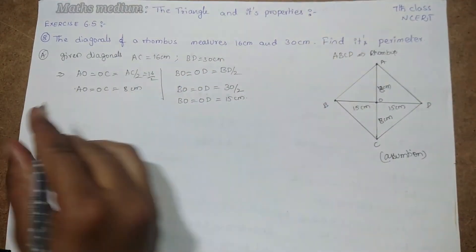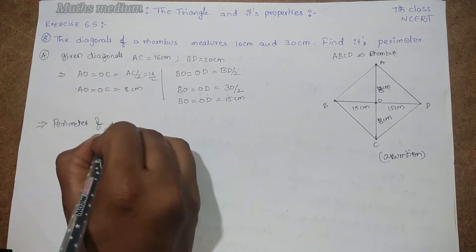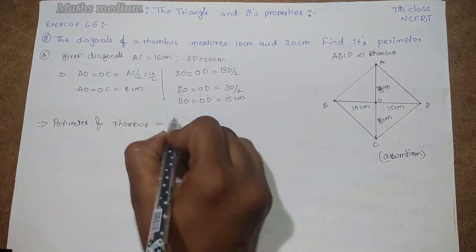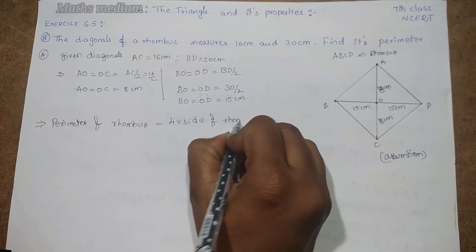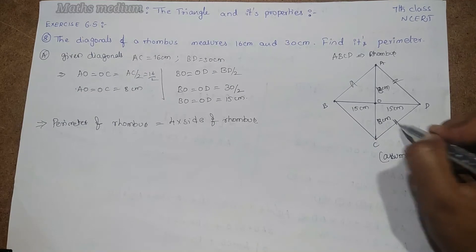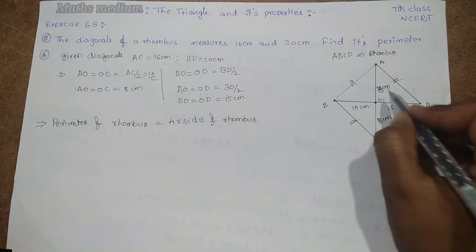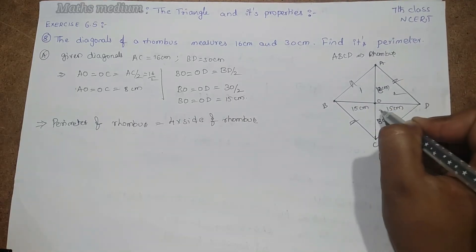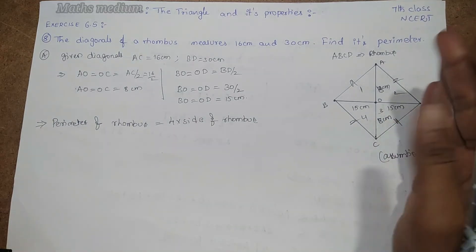Now we have to find the perimeter. Perimeter of rhombus equals 4 times the side of the rhombus because all sides are equal in length. If you take any triangle here, we have 1, 2, 3, 4 triangles, but all are symmetrical and equal.